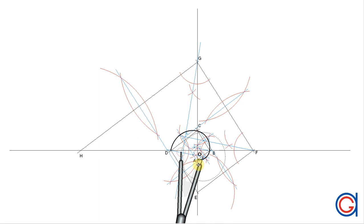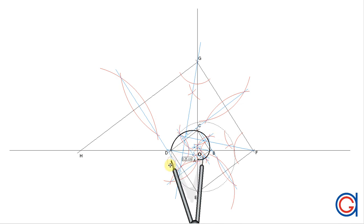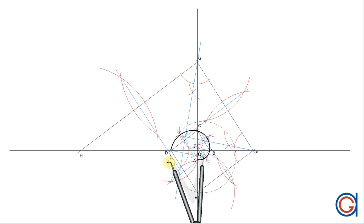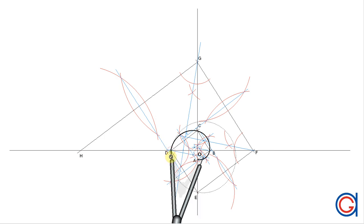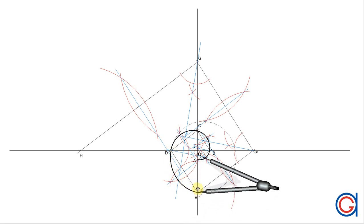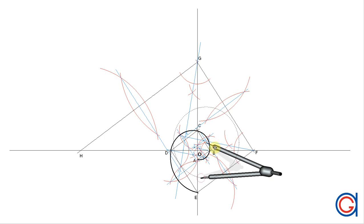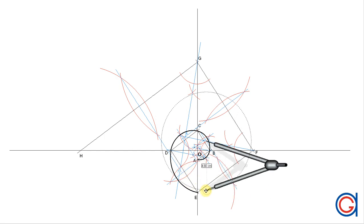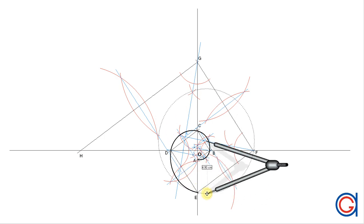Next, setting the compass on point 4 and radius 4D, we scribe an arc until it cuts point E. So now you can really see our spiral starting to take shape. We continue this process: setting the compass on point 5 and radius 5E, we scribe an arc until it cuts point F.